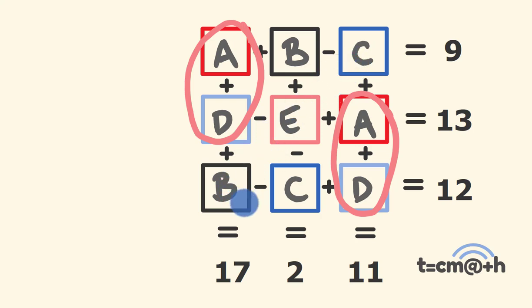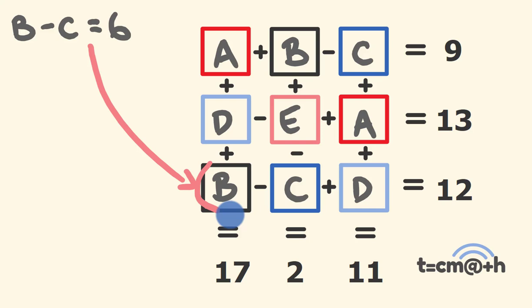In fact, B is going to be the bigger one, so we can say the following is true. We can say that B subtract C is equal to the difference between 17 and 11, which is 6. Now what you might notice is there is a B subtract C just here. So we can substitute B take away C with 6 here, because we know that value is 6.